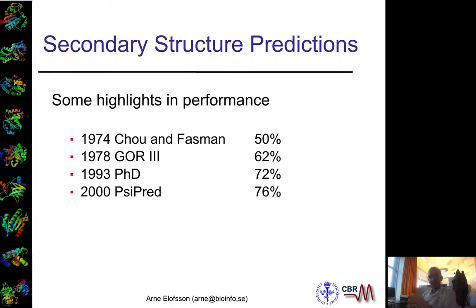We're talking about secondary structure prediction methods. A bit of a historical overview: when this field started in the 70s, we had about 50% accuracy.